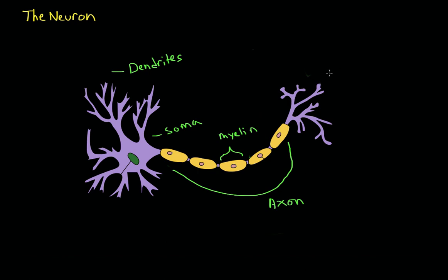And here at the very end, we have what's called the axon terminal or the terminal buttons. And this is the part of the neuron that reaches out and touches other cells and transmits the message to them.